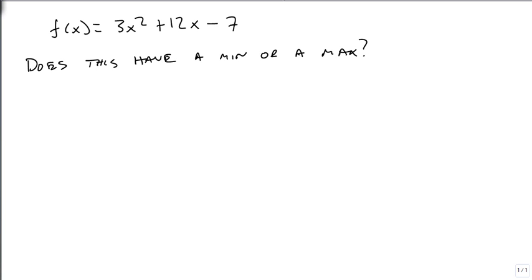We're going to start with a simple example. f(x) = 3x² + 12x - 7. And we want to determine, does this have a minimum or a maximum? We look at the first value, we look at the 3, and we say, oh, this is positive. That means it has a minimum because it's going up. It has a low point.